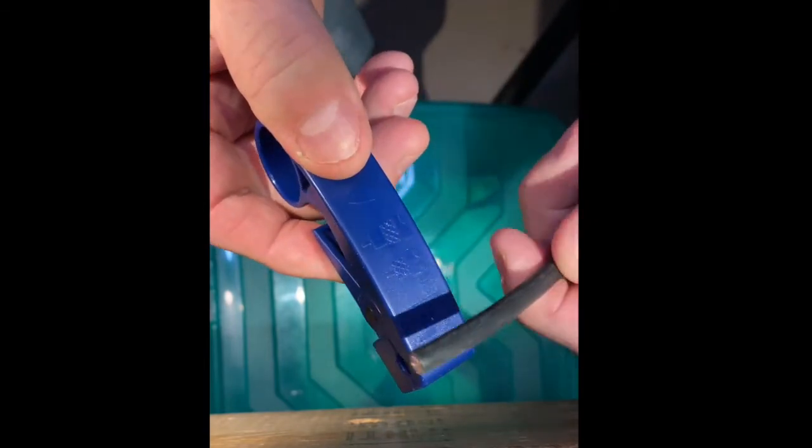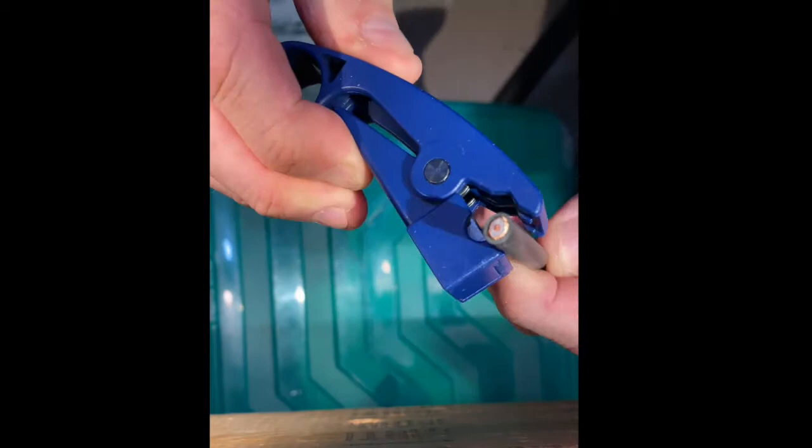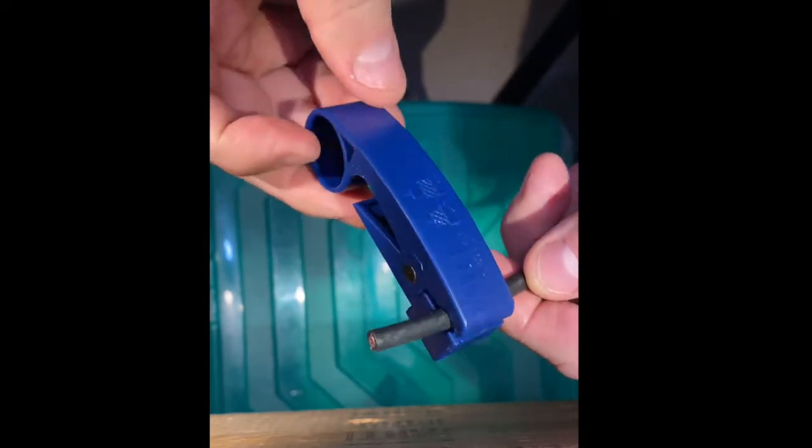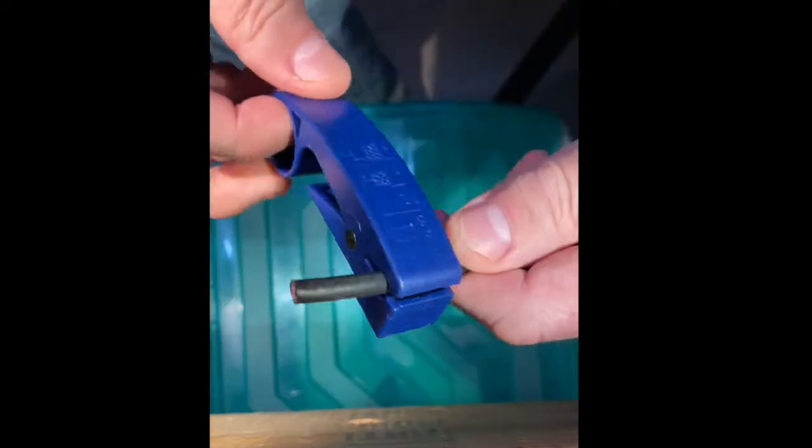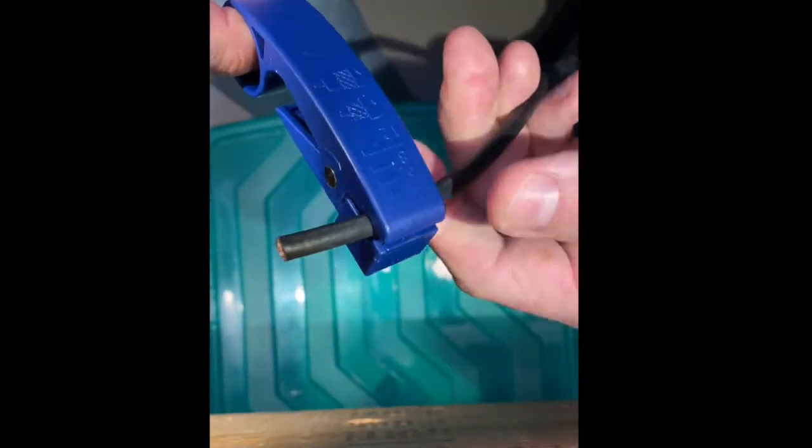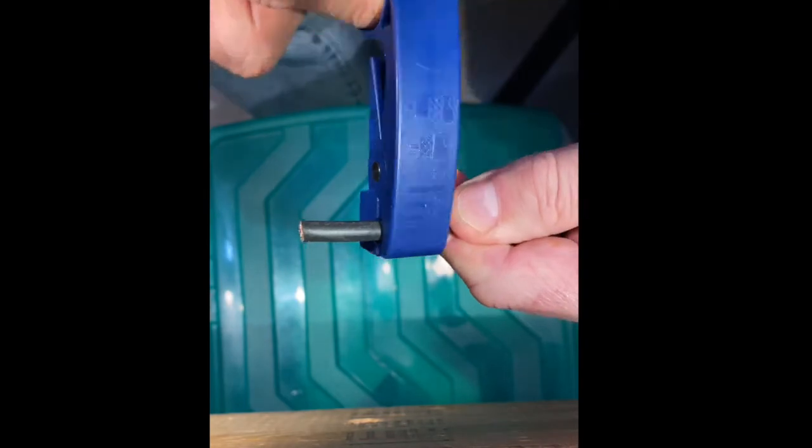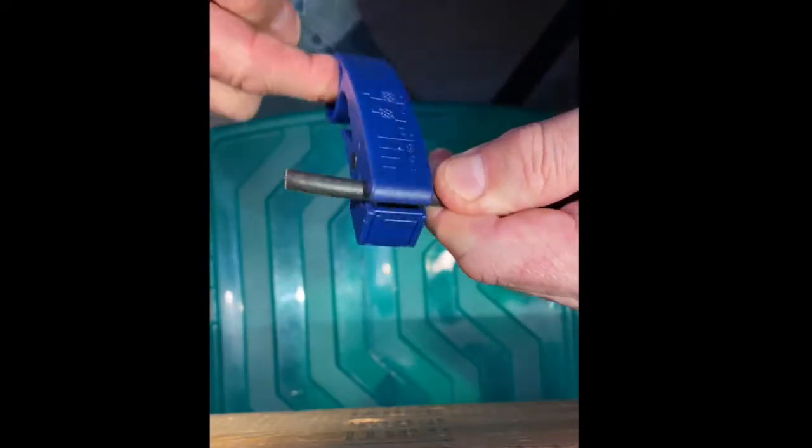So we're going to put the unused end into the end of the stripper here, and then we're going to run it according to the little sign here. We're going to turn it this way. I hold the coax stiff so it stays, and I turn it. I'm supposed to run this thing around here three times.